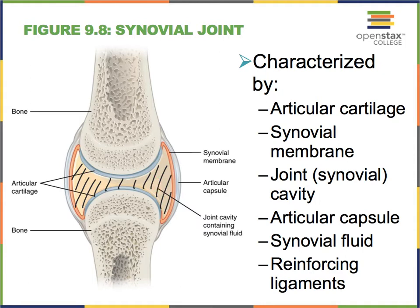Remember that most bodily fluids arise from our blood somehow or another. Finally, interconnecting one bone with the other, we have ligaments sitting directly on top of our synovial membrane, and we refer to these ligaments as our articular capsule.